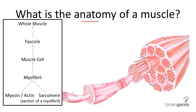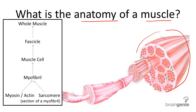So what is the anatomy of a muscle? What's the shape and structure? I would think of a whole muscle as sort of a rope with many fibers coming out of it, smaller and smaller and smaller. So let's start with the smallest part of this muscle.